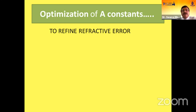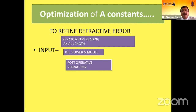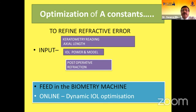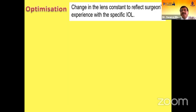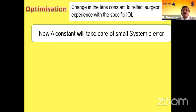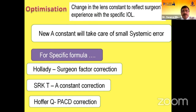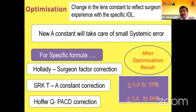What about optimization of the A-constant? It is used to refine the refractive outcome. Different inputs include keratometry readings, axial length, IOL power and model, and postoperative refraction. You can use the biometric machine or go for online dynamic IOL optimization. Optimization means changing the lens constant to reflect the surgeon's experience with a specific IOL, and the new A-constant will take care of small systematic errors. For specific formulas: Holladay uses surgeon factor, SRK-T uses A-constant correction, and Hofer-Q uses pACD correction. After optimization, the result should be within 0.5 diopters in 70% of cases and within 1 diopter in more than 90% of cases.